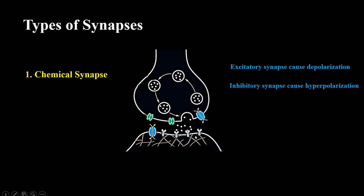The excitation leads to firing of an action potential, while inhibition prevents it. The second type is electrical synapse.